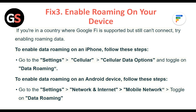Fix 3: Enable roaming on your device. If you are in a country where Google Fi is supported but still cannot connect, try enabling roaming data. To enable data roaming on an iPhone, go to Settings, then Cellular, then Cellular Data Options, and toggle on Data Roaming.